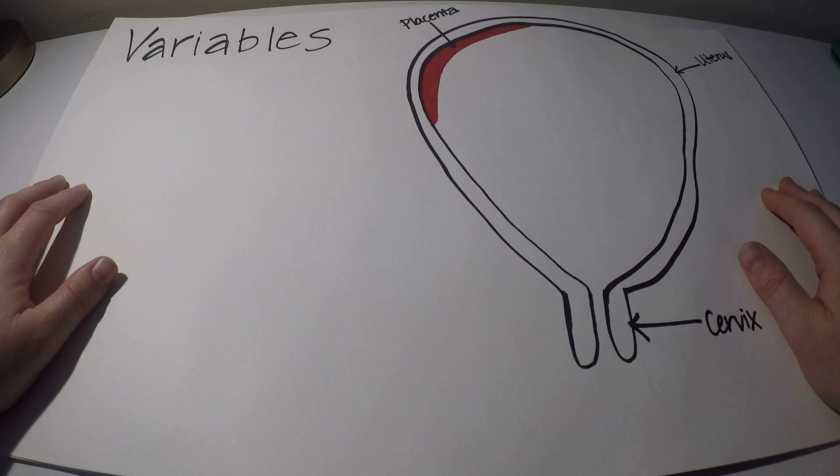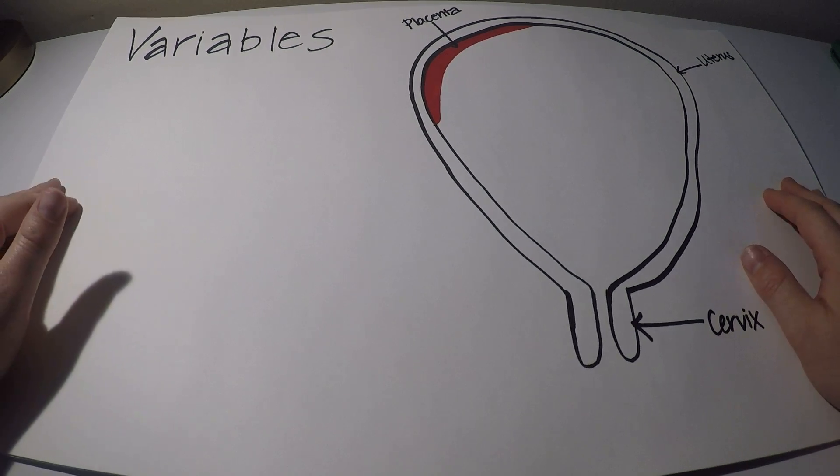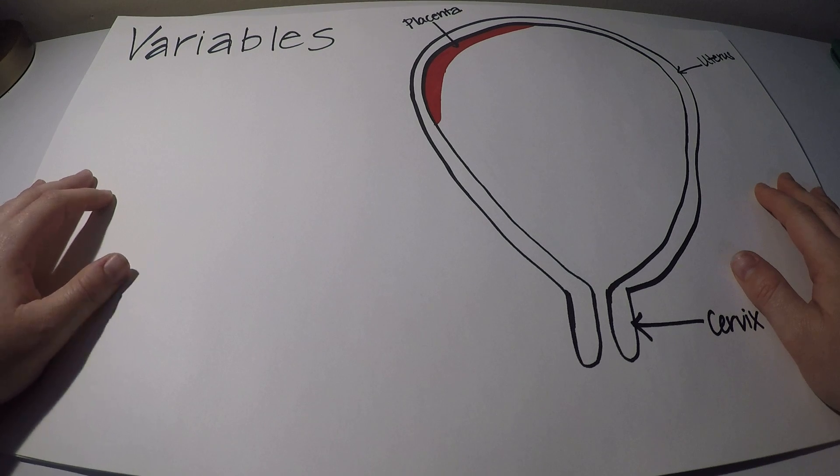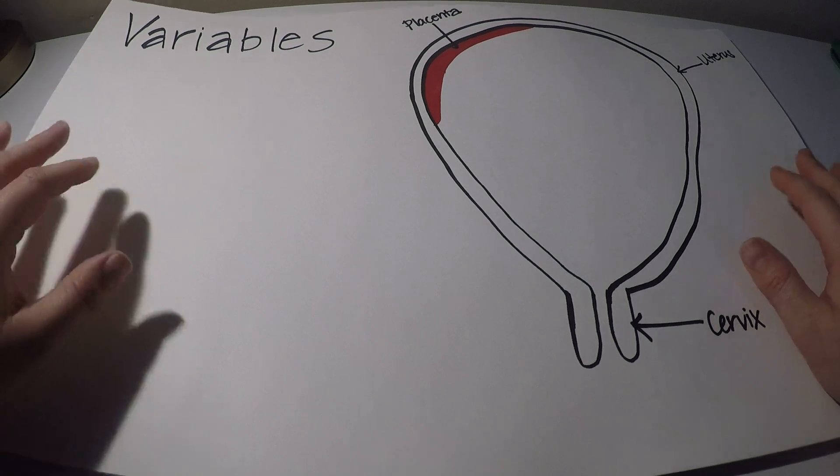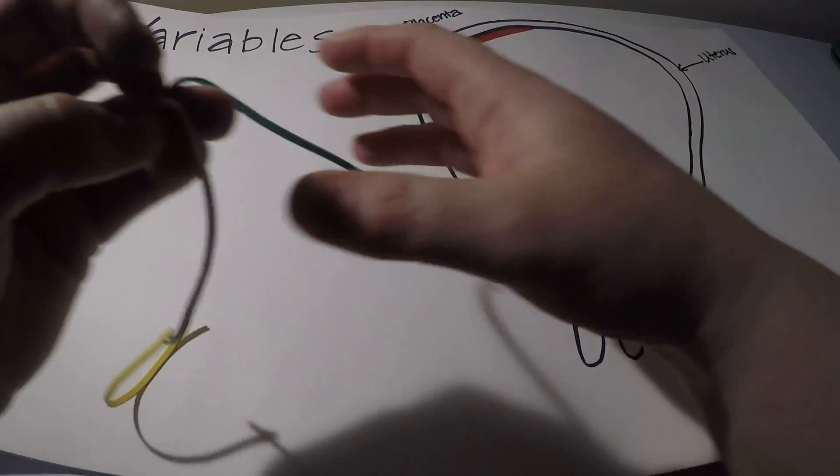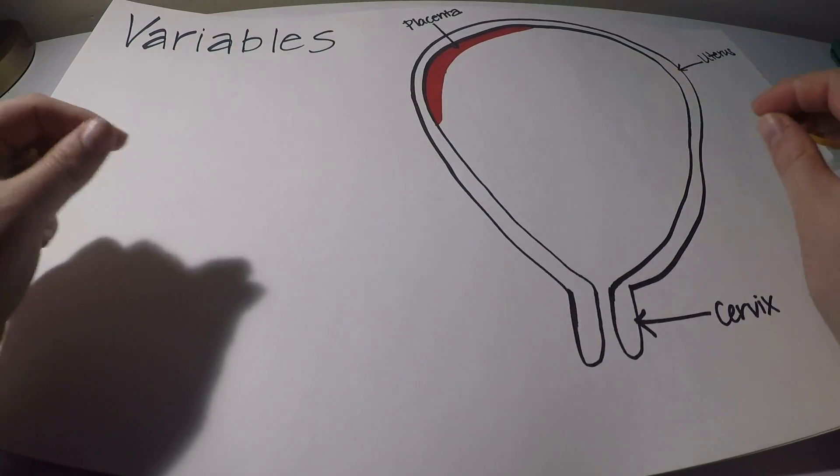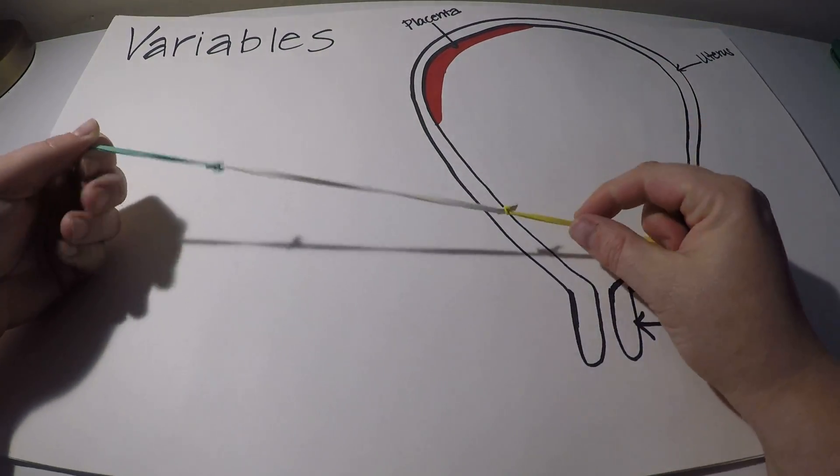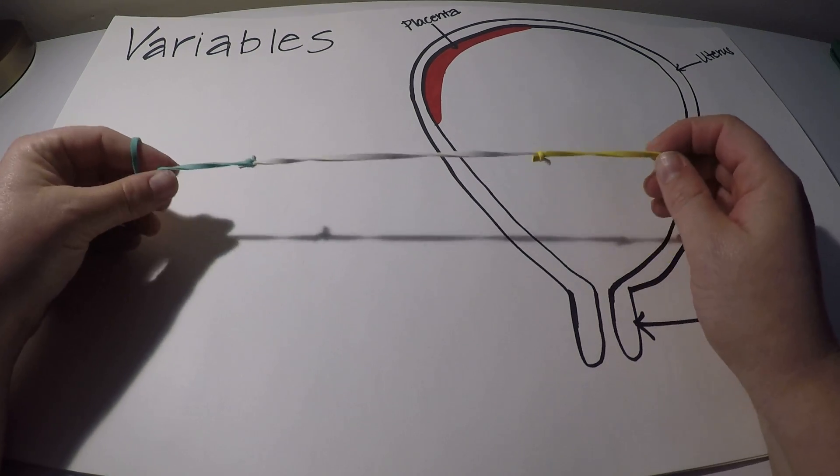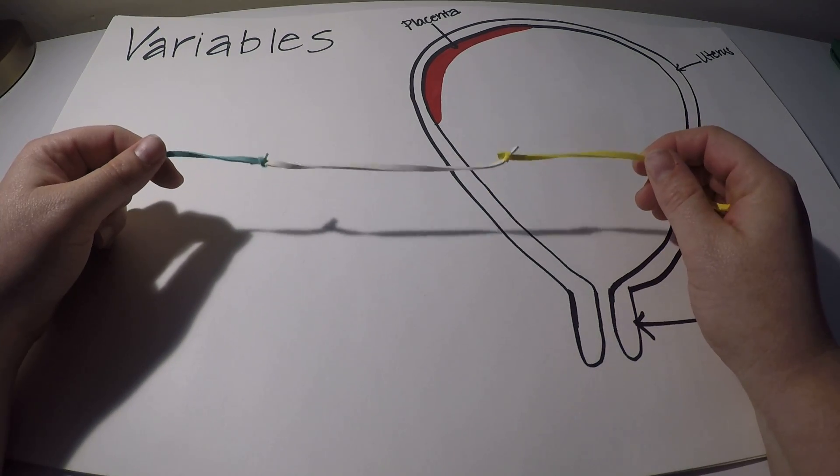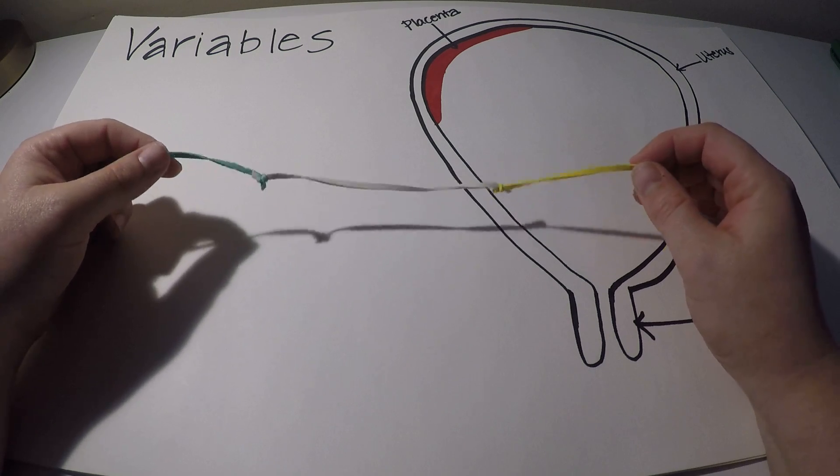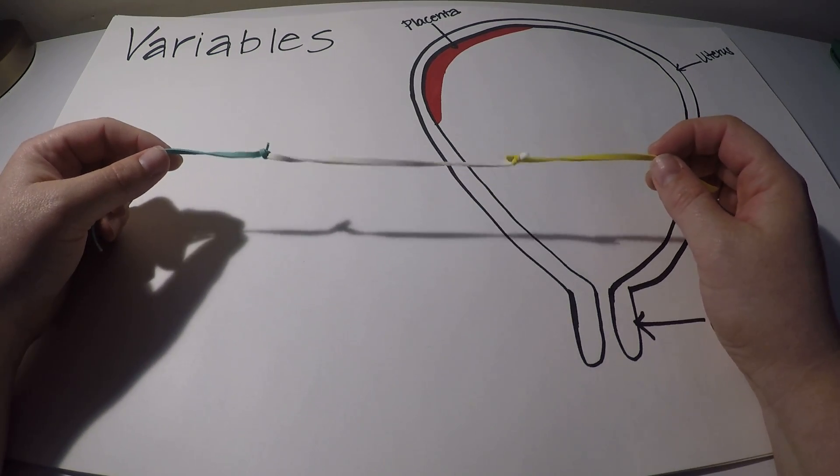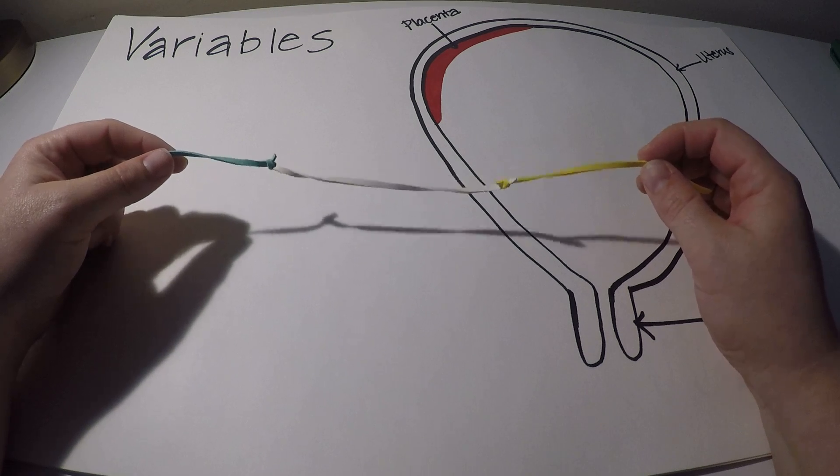So the first one that we're going to talk about are variable decelerations, or what we call variables. These decelerations are caused by cord compression. So anything that's going to compress the umbilical cord. So this is my poor man's umbilical cord here. It's just some rubber bands tied together. In real life, the umbilical cord is actually pretty squishy. It's two arteries and one large vein. We remember that by big V little a, and it's got jelly that kind of wraps those veins and arteries in a cushion.